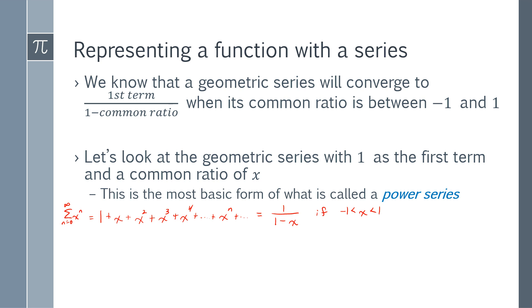This is called a power series because we're using powers to generate it. And we've created something useful: if I wanted to estimate one over one minus x using this series, I can't use the whole infinite series, but I could say the fourth-degree approximation is 1 + x + x² + x³ + x⁴, which is approximately one over one minus x for x between negative one and one. This circles back to what we did with Taylor polynomials — generating polynomials of whatever accuracy we want by using more terms to estimate functions.